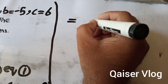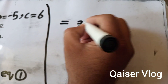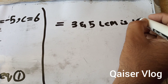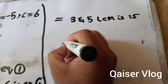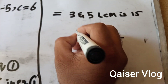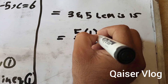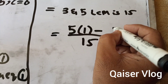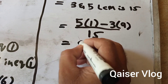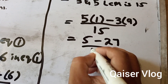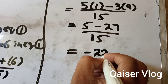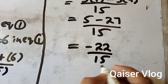Now we find the LCM of 3 and 5. The LCM of 3 and 5 is 15. We write 15 in the denominator. 3 multiplied by 5 is 15 and the numerator is 1. Then minus: 5 into 3 gives denominator 15, numerator is 9. So 5 multiplied by 1 is 5, minus 3 nines are 27, divided by 15. So 5 minus 27 equals -22.